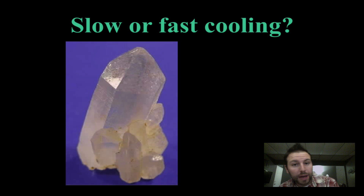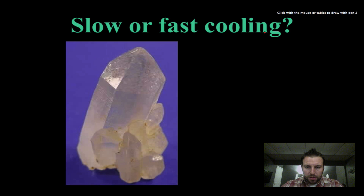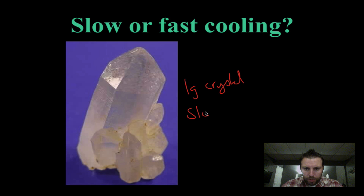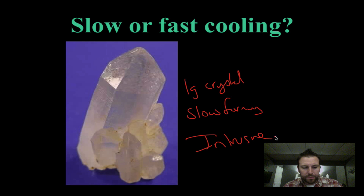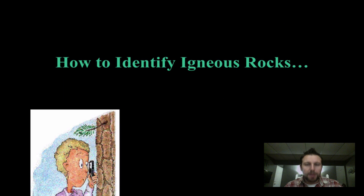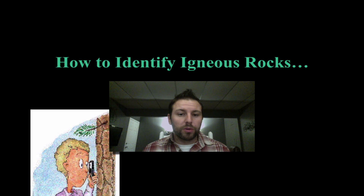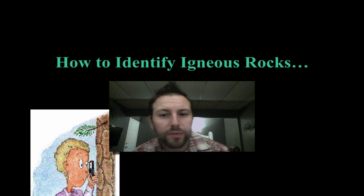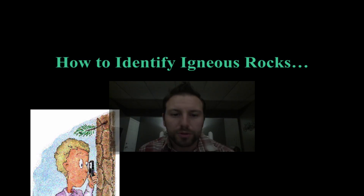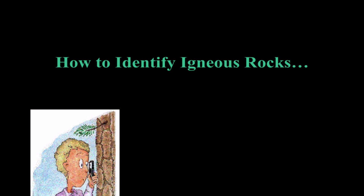Looking at this rock here — it appears to have large crystals, and remember large crystals mean slow forming, so it must be intrusive. That's about it — we just wanted to take a look at intrusive and extrusive igneous rocks. I hope you enjoyed this screencast. The next one will cover identifying our igneous rocks. Take care.